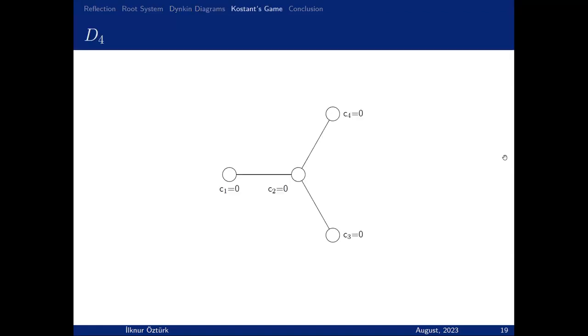This shows all finite irreducible root systems. Now we know the diagrams. In the later part of the presentation, I want to play a game with you. The game can be played on Dynkin diagrams. For this, I have to choose one of them, and I choose D4.